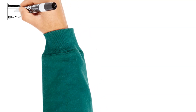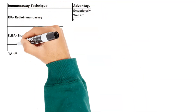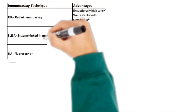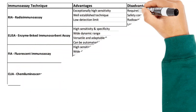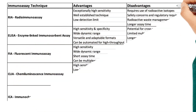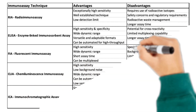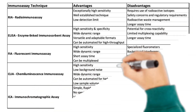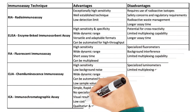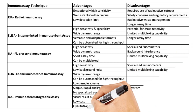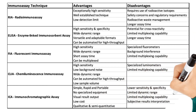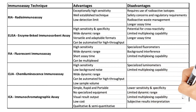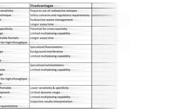This table shows some of the advantages and limitations of the immunoassay techniques that we have just discussed. Bear in mind that this was just an overview of the main types of immunoassay methods and that there are several other types, variations, and modifications available.